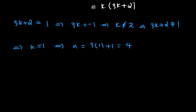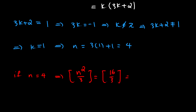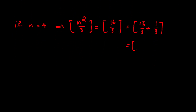Testing n = 4: the floor of 16/3 equals the floor of 15/3 + 1/3, which is the floor of 5 + 1/3, which equals 5. Alternatively, since 16/3 is between 5 and 6, the floor of 16/3 is 5. Either way, 5 is a prime number, so n = 4 is a valid solution.